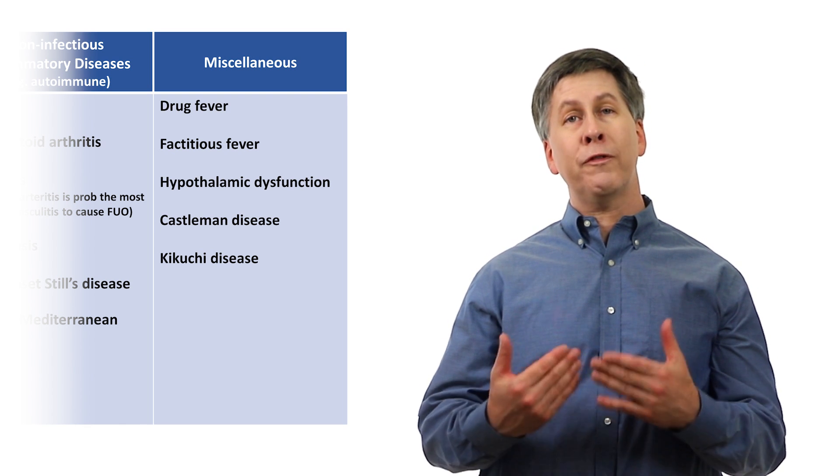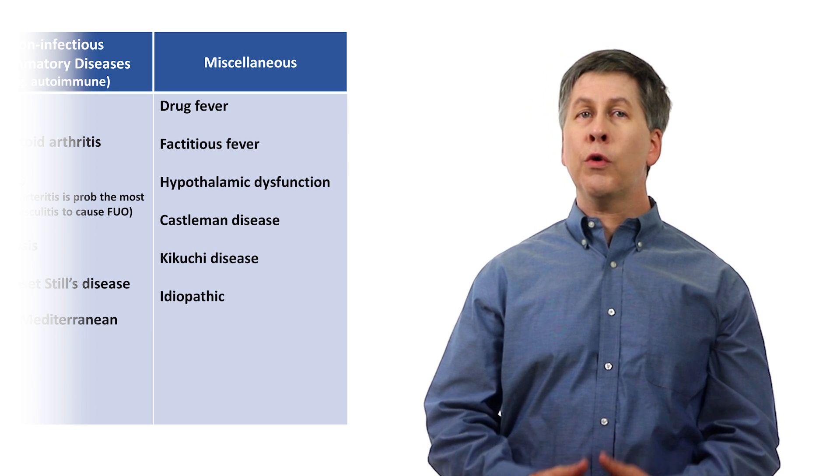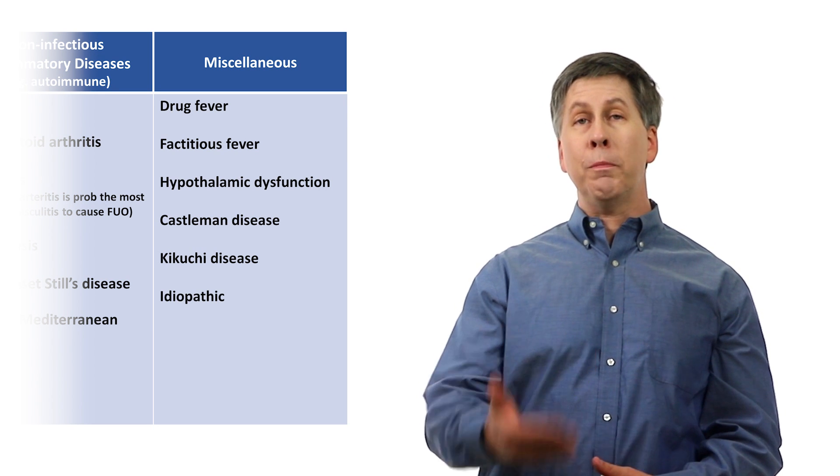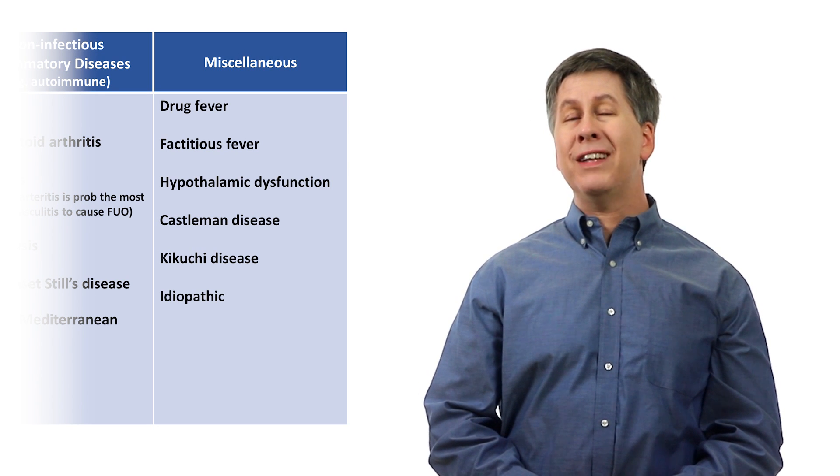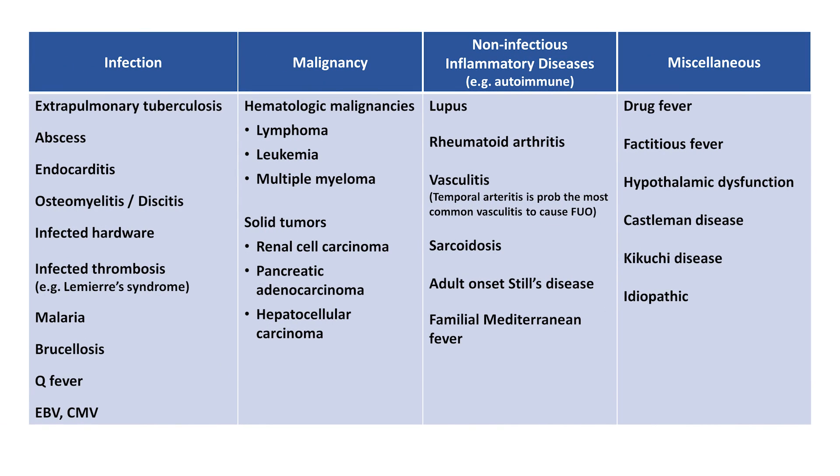Finally, as mentioned before, there is idiopathic FUO, in which despite a thorough investigation, which I'll review in a few minutes, the etiology remains unknown. The reason that it's important to include idiopathic in this framework is because, as mentioned, it is one of the most common etiologies of FUO worldwide. Other common etiologies probably include extrapulmonary TB, abscesses, endocarditis, lymphoma, lupus, and adult-onset Still's disease.